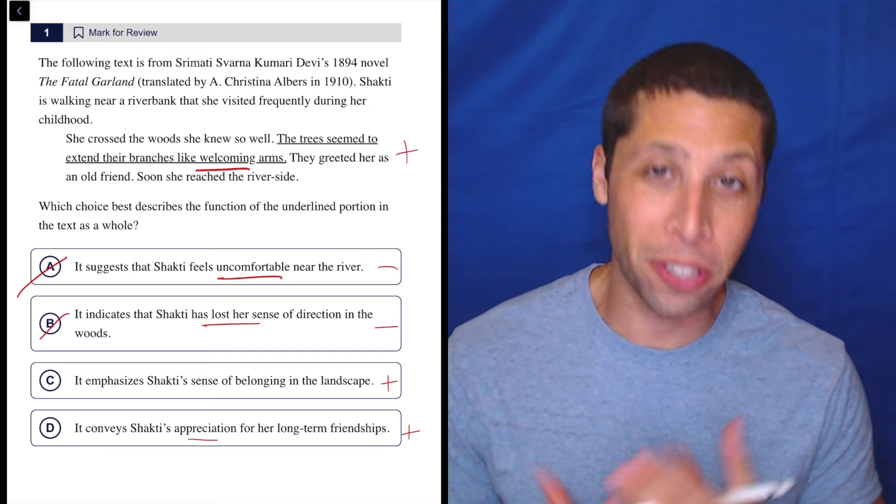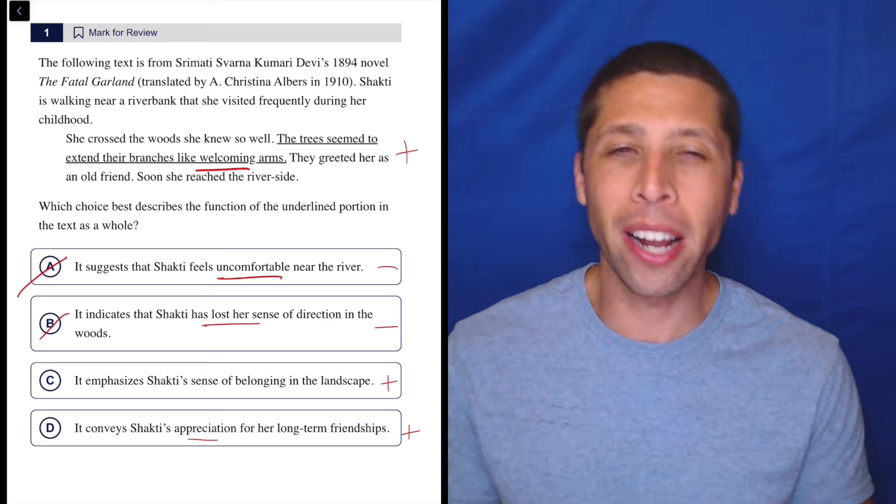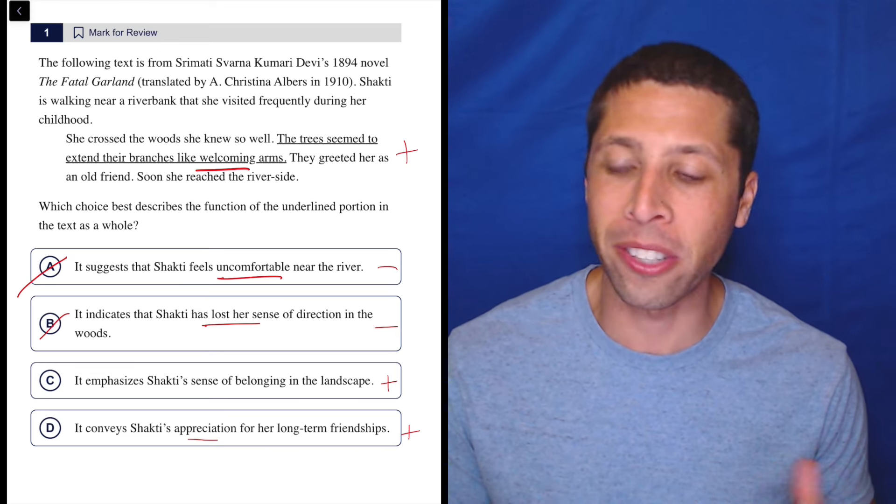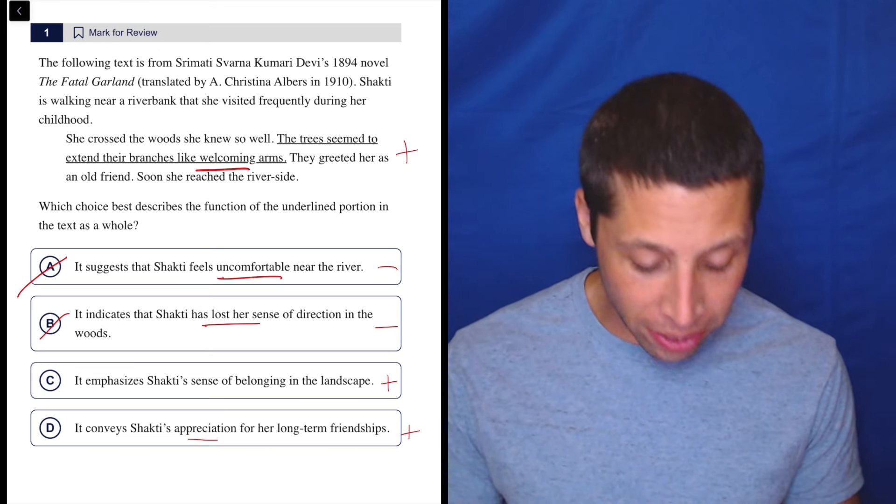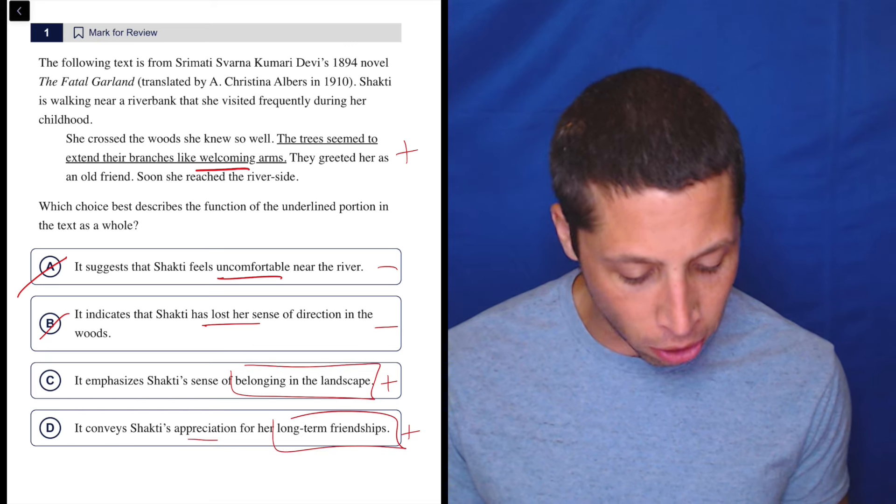So dumb summaries aren't always going to solve everything for us, but they can make a question a lot easier by just cutting through the noise and the choices that make no sense. So now we can think a little bit more deeply - is it about belonging in the landscape, or is it about long-term friendships?